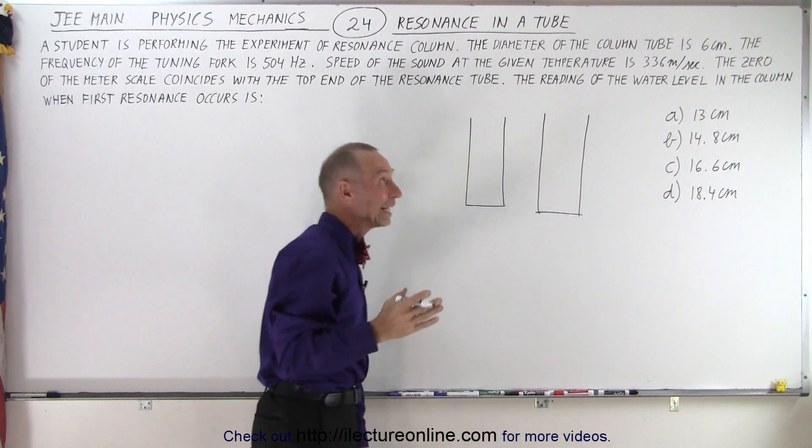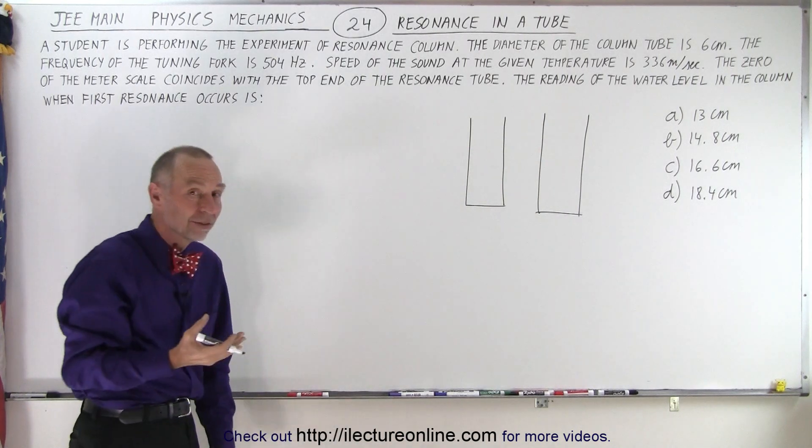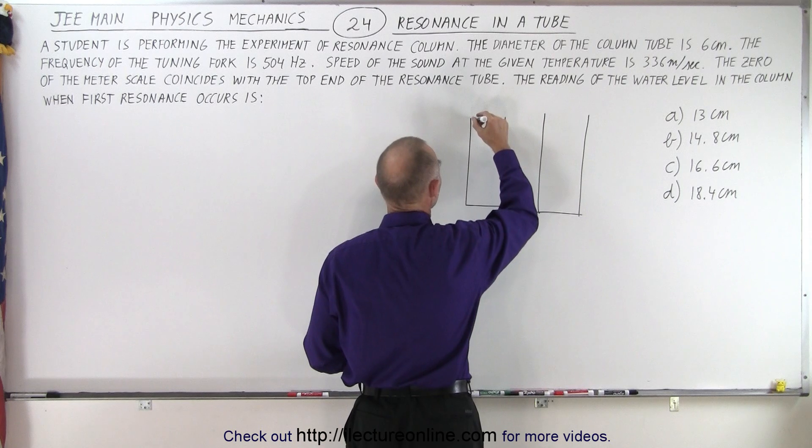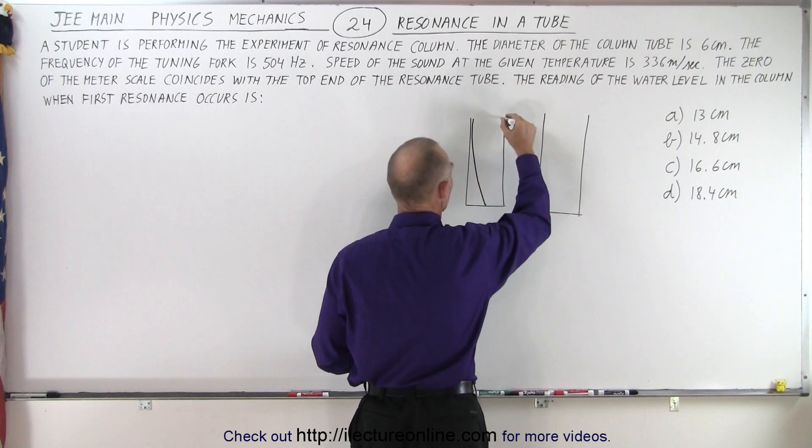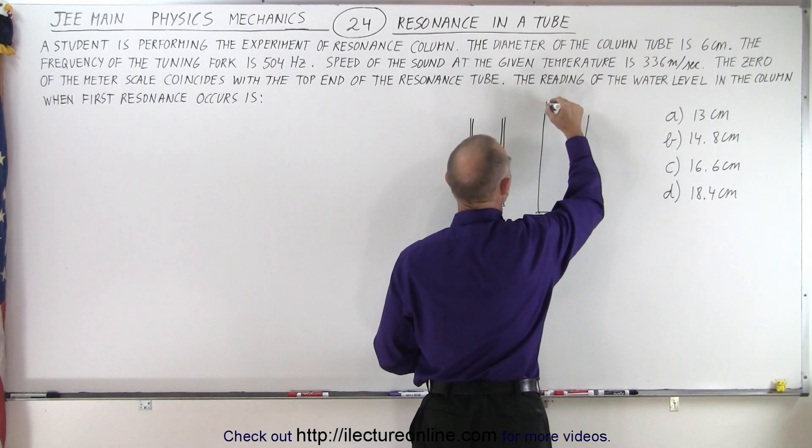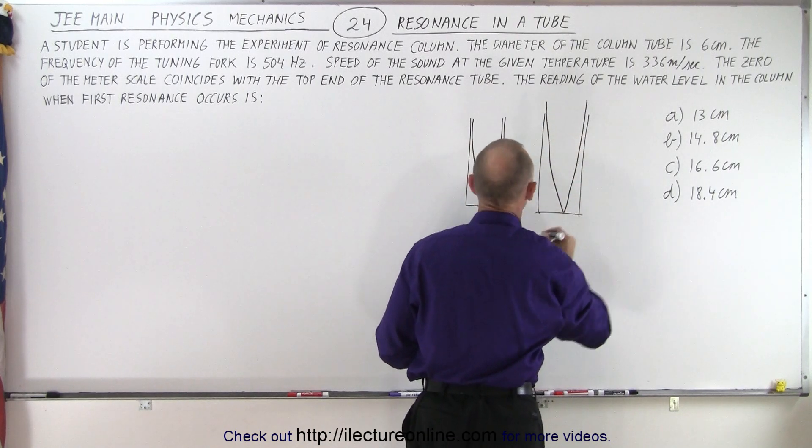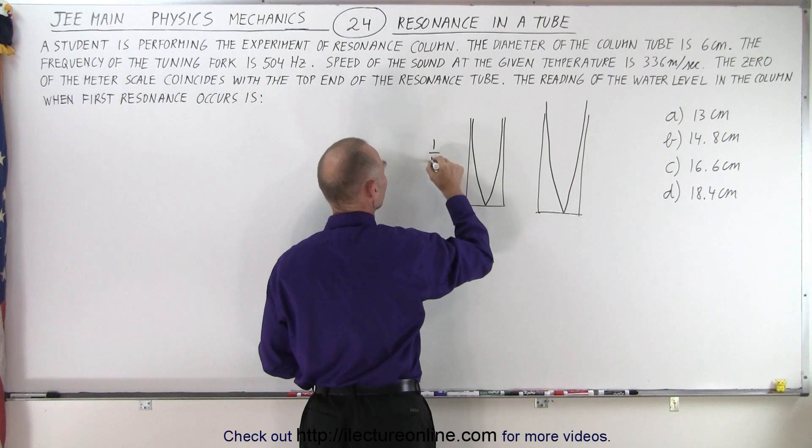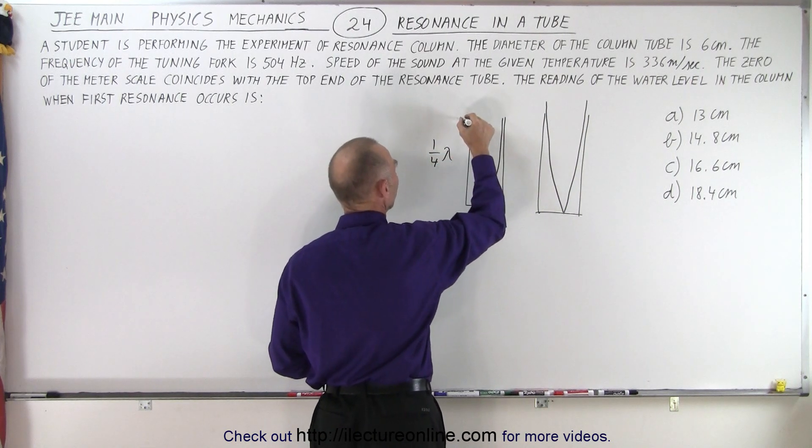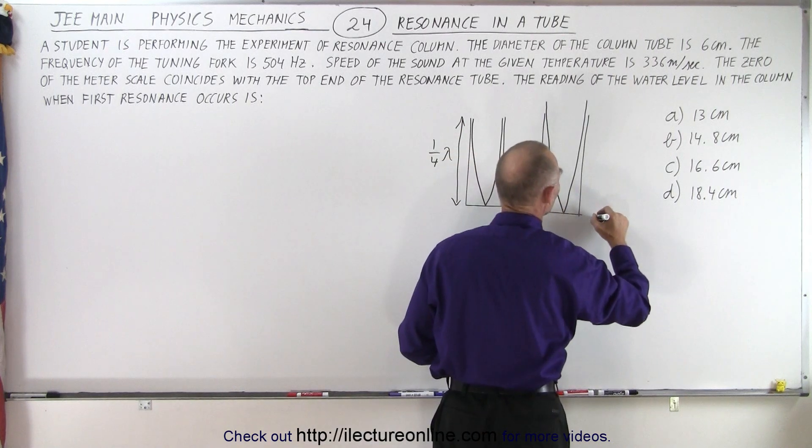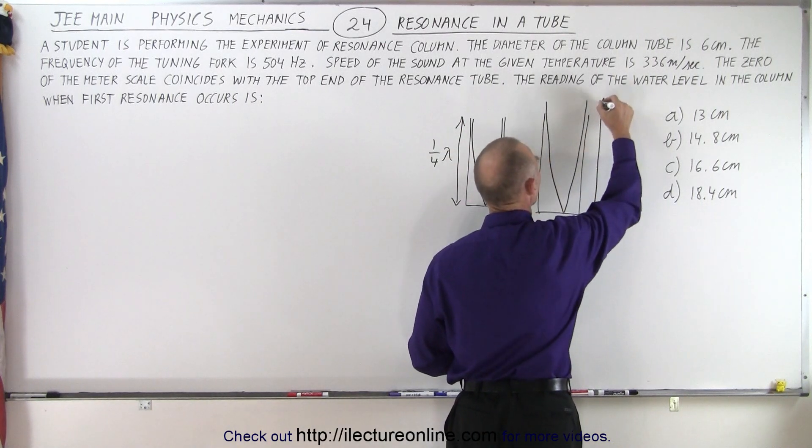And when we're dealing with first resonance, then the wave inside the tube will either look like this, or it will look like this. So that a quarter wavelength goes from the top of the tube to the bottom of the tube, or the quarter wavelength goes a little bit beyond the top of the tube.